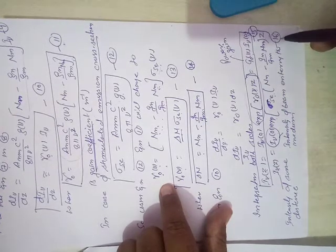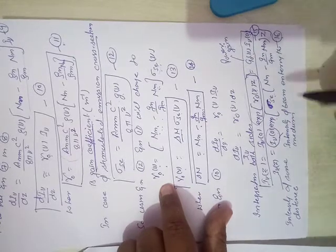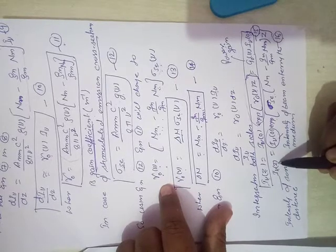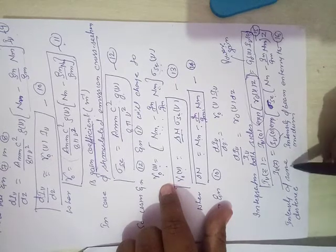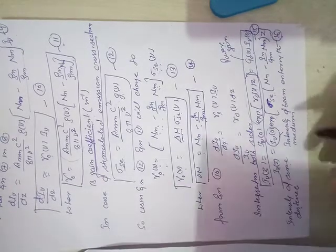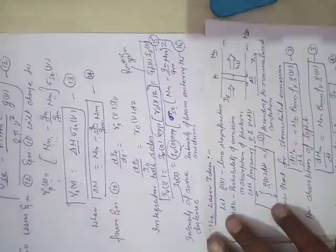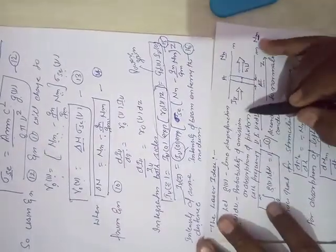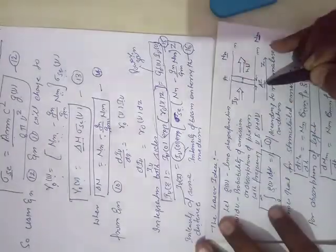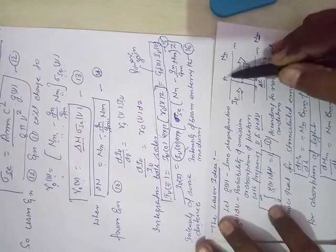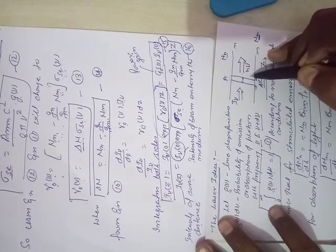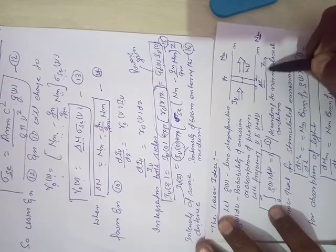I_nu z direction equals this one multiplied by exponential of sigma. Here we can substitute the value of gamma node from equation number 13. By substituting this, we can form this equation in a different mode. Let us name it equation number 16.